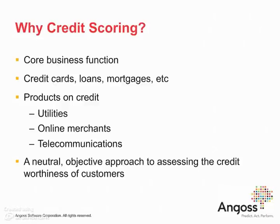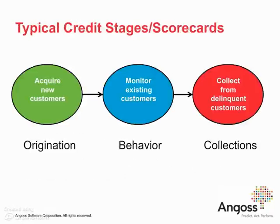Credit scorecards in general are a neutral, objective way to assess the credit worthiness of customers and applications. Looking at the typical stages in the lifetime of any credit product, we build corresponding scorecards or models to calculate the likelihood of default at each stage. First, at the origination level, where new customers are applying for the product, we build an application scorecard. Its purpose is to calculate the likelihood that if we accept these customers and grant them credit, will they actually meet their obligations or not?